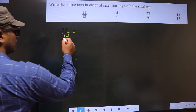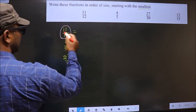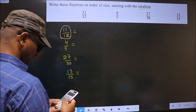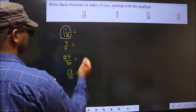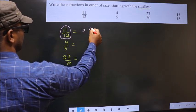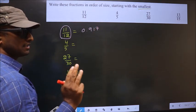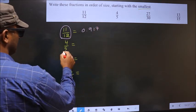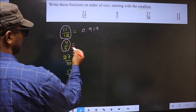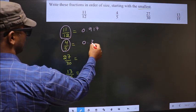Now you put 11 by 12 in the calculator. You get 0.917. I rounded up to 3 significant figures. Next, now you put 4 by 5 in the calculator. We get 0.8.